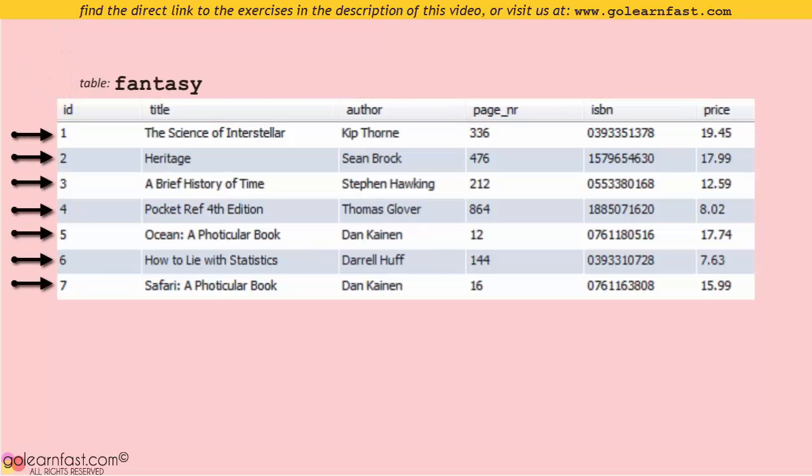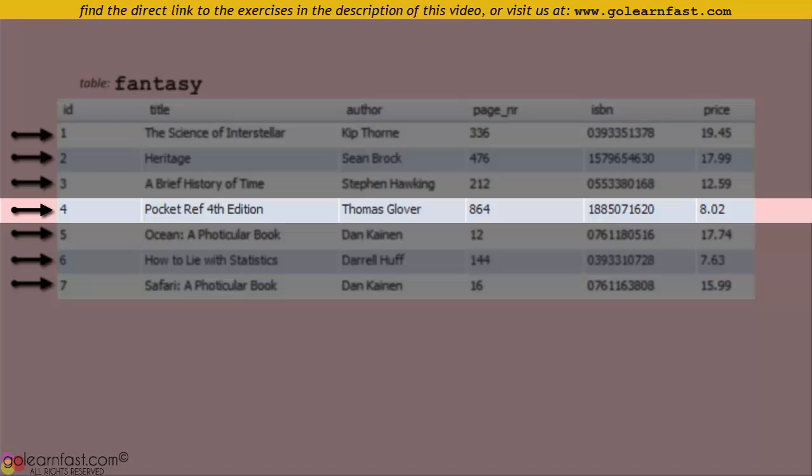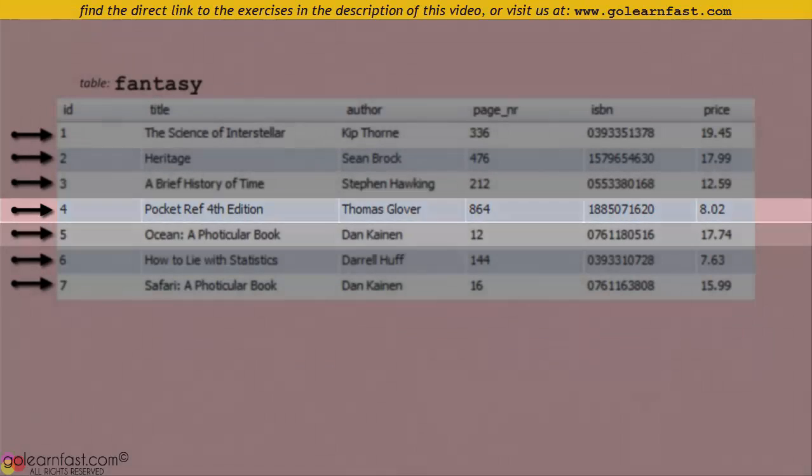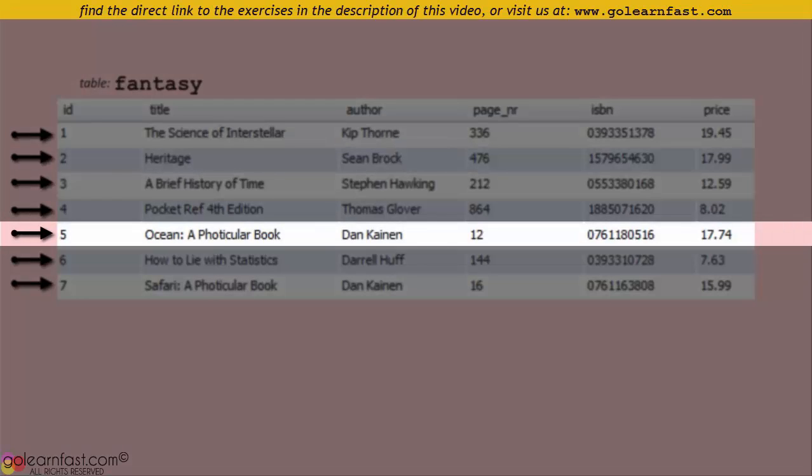Each row of the table represents one single book. The row with ID of 4, for instance, corresponds to this particular book. And the row with ID of 5, for instance, corresponds to another book. And so on.